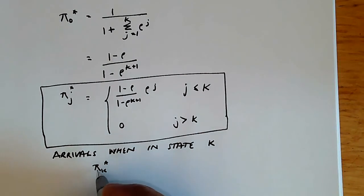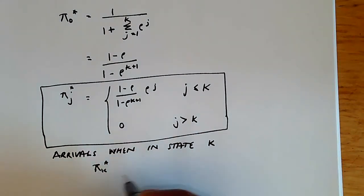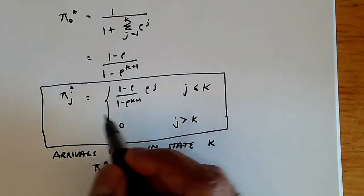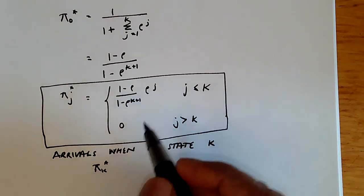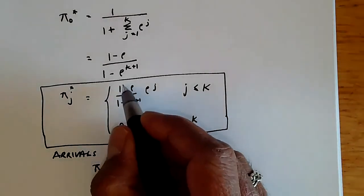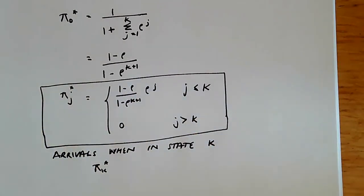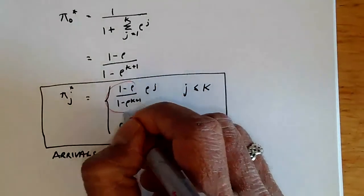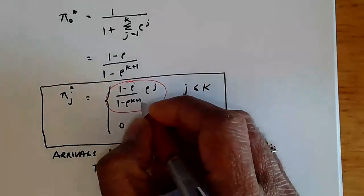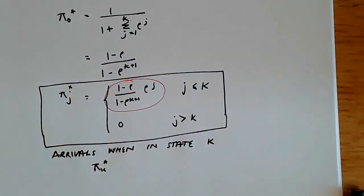And so if we want to know what should be the value of k such that the probability of blocking is below a certain value, we can plug that into this equation over here. And we can size the system. We can choose the k such that this blocking probability is below a desired value. And that is how we can use queueing theory to size the system.